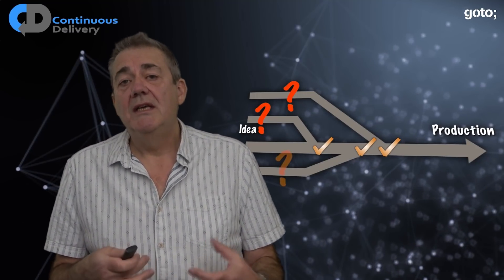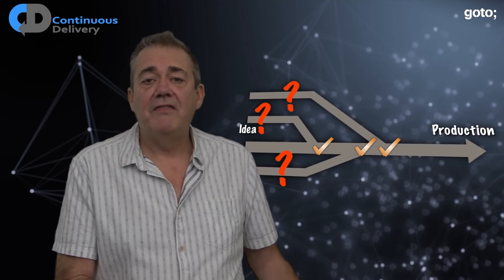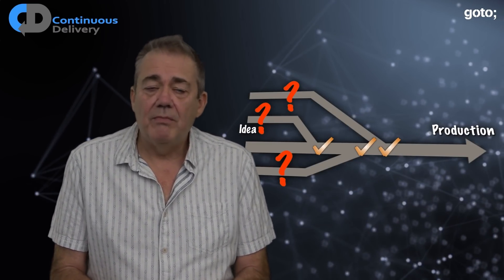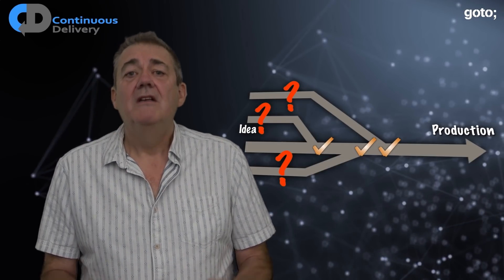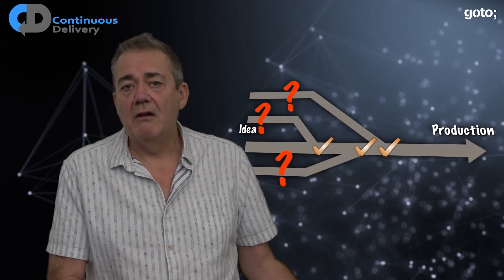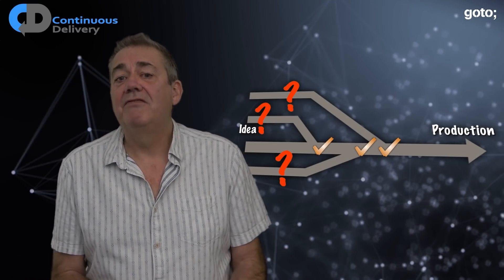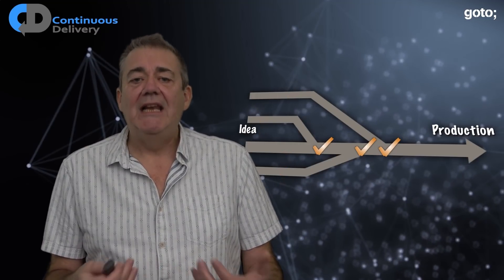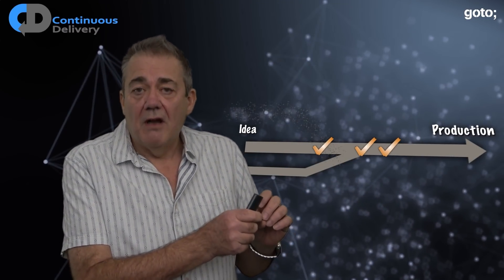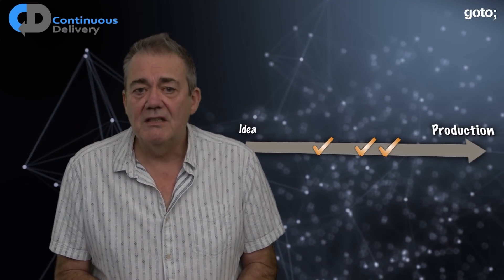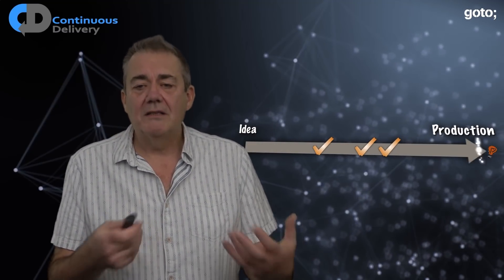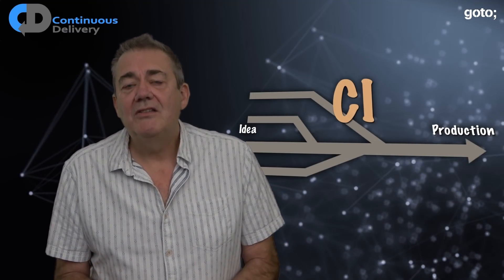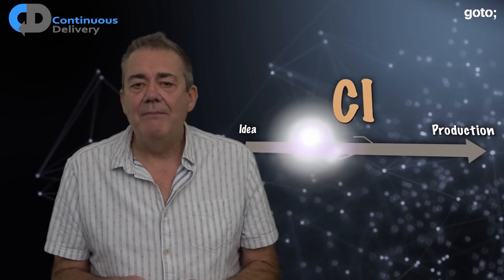What some teams do is run what they call continuous integration on their feature branches. The downside is that they are now testing a version of the code that is unlikely to ever be the version that will go into production. So we're spending time, effort, and money evaluating code that isn't the truth. A better strategy is to essentially eliminate those branches and always work on the line of truth in the code. That's what continuous integration is.